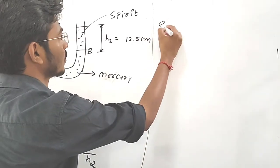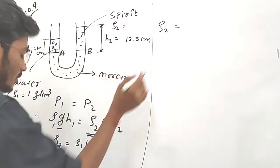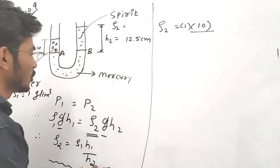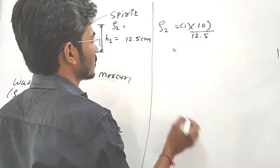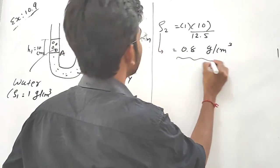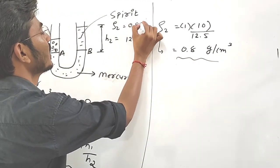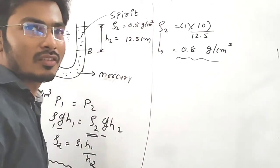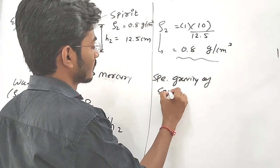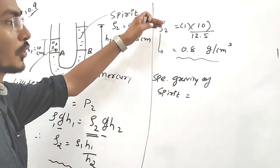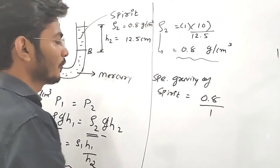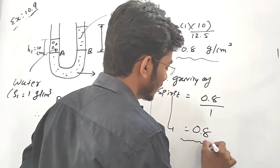After simplification, ρ2 = 0.8 gram per centimeter cube. So this is our ρ2 value. Now we have to find the specific gravity of the strip. Specific gravity = ρ2 divided by ρ_water = 0.8 divided by 1 = 0.8. So our final answer is 0.8.